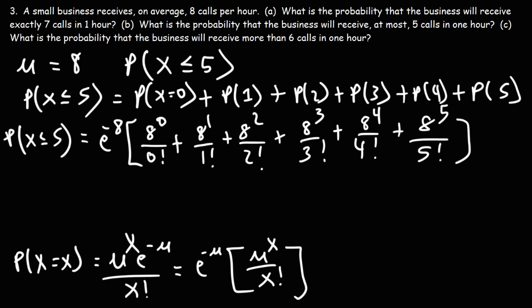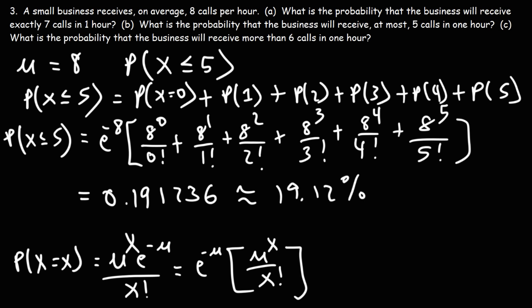Go ahead and type this into your calculator. The result is 0.191236, so there's approximately a 19.12% chance that the business will receive at most 5 calls in 1 hour. That's it for part B.